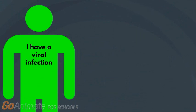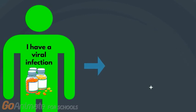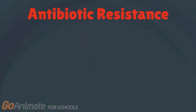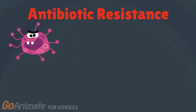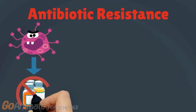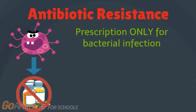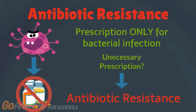If someone with a viral infection were to take antibiotics unnecessarily, he or she is at risk of destroying protective bacteria in the body, which can lead to antibiotic resistance. Antibiotic resistance is a phenomenon in which some bacteria evolve or mutate to become stronger, and then cannot be destroyed by antibiotics when they are especially needed. For this reason, doctors are careful to only prescribe antibiotics when they are very certain the infection is bacterial. Prescribing unnecessarily can lead to antibiotic resistance.